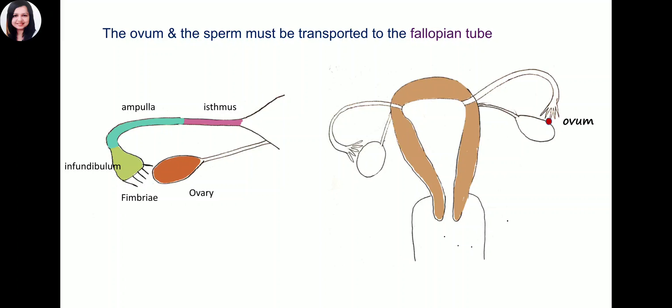At ovulation, one ovum is released into the abdominal cavity. The fimbria contract in sweeping motion to guide the released ovum into the fallopian tube. Fimbria are also lined by cilia, which beat in waves towards the interior of the fallopian tube.